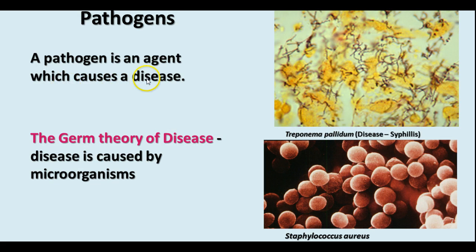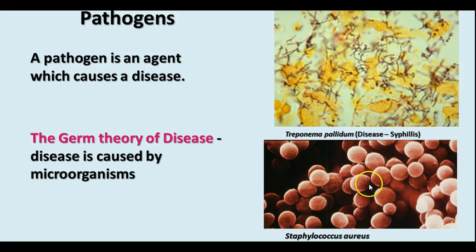Pathogens are agents which cause disease. We often think about bacteria as being pathogens, and many pathogens are bacteria, but they can also be viruses or protista. We're talking now about the germ theory of disease — that disease is caused by microorganisms. Two examples that cause diseases in humans are Staphylococcus aureus, which causes staph infections, and Treponema pallidum, which produces syphilis.